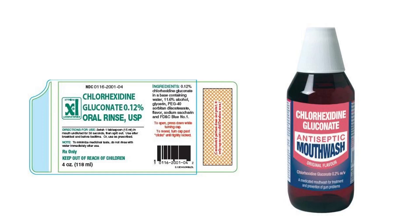Number one is the Chlorhexidine Gluconate Oral Rinse USP. This mouthwash contains an antibacterial agent known as Chlorhexidine. We can see from the label that 0.12% Chlorhexidine Gluconate in a base containing water, 11.6% alcohol, glycerine, polyethylene glycol, sorbitan distearate, flavor, sodium saccharine, and FD&C Blue number one. So this is a Chlorhexidine mouthwash.